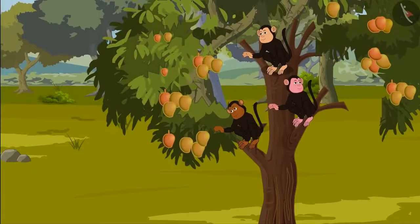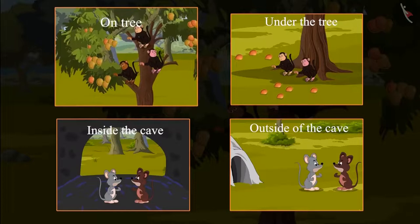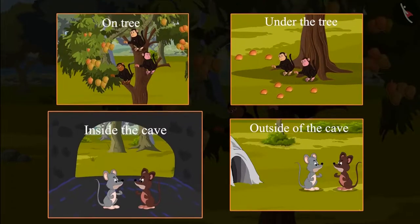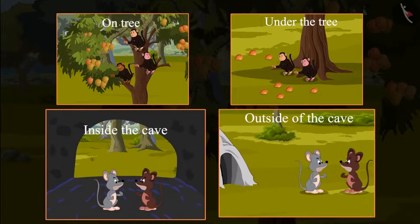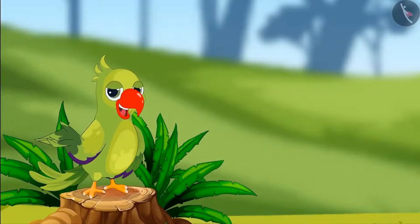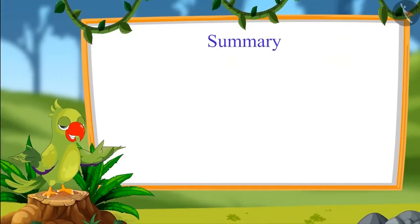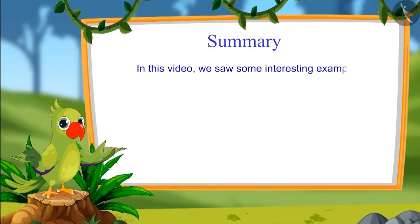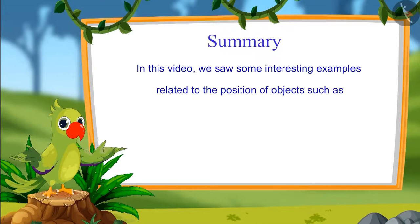So children, we saw that few things were on the tree and few were under the tree. Few were inside, few were outside. These are called the position of objects. In this video we saw some interesting examples related to the position of objects such as on, under, inside, and outside.